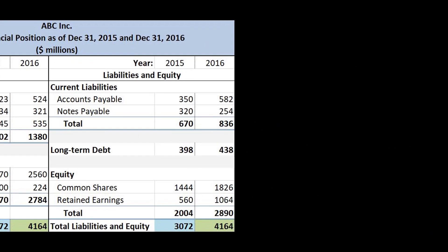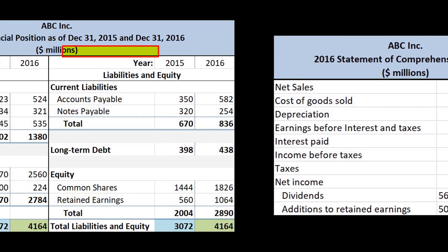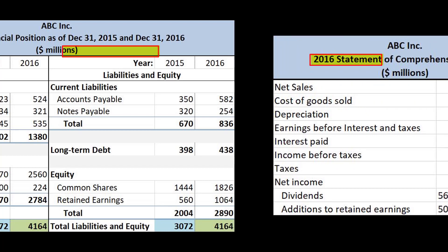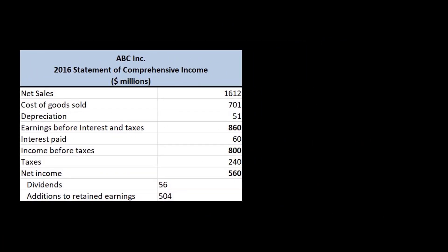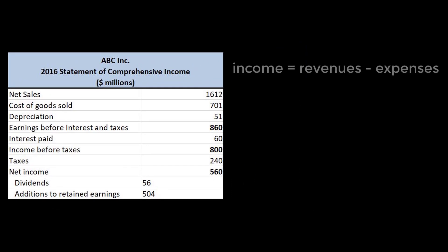Unlike the statement of financial position, which captures the value of the firm at a particular point in time, the statement of comprehensive income measures change in value over a period of time, usually a year. The underlying principle behind the statement of comprehensive income is that income equals revenues minus expenses.